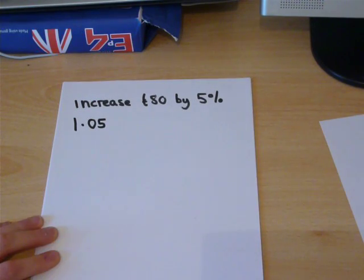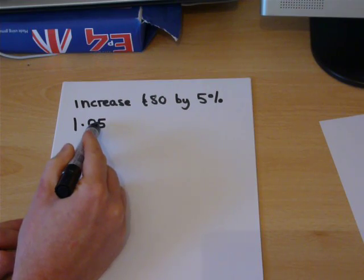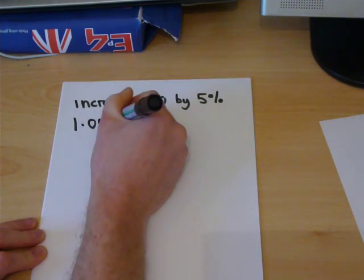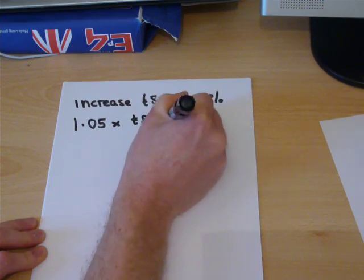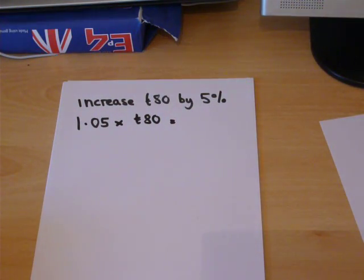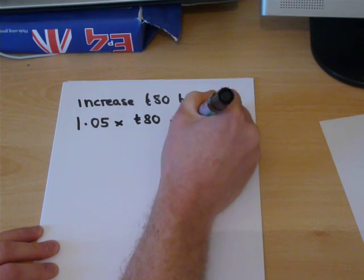which represents 100%, with a 5% added on top of it, times by our 80 pounds, will indeed increase 80 pounds by 5%. This gives us 84 pounds.